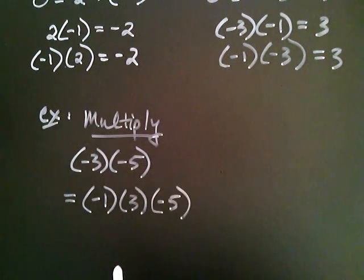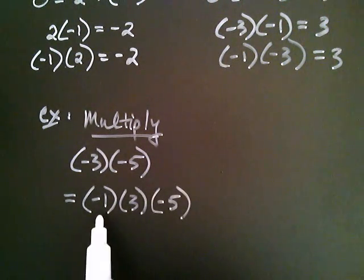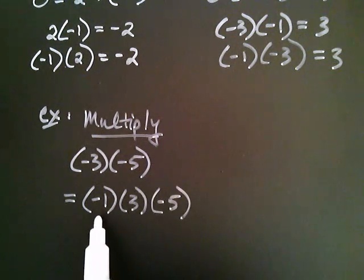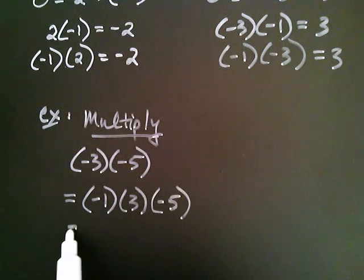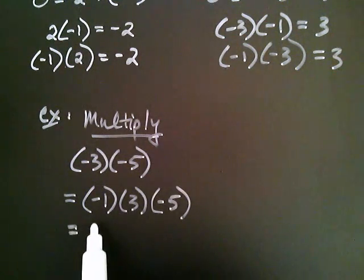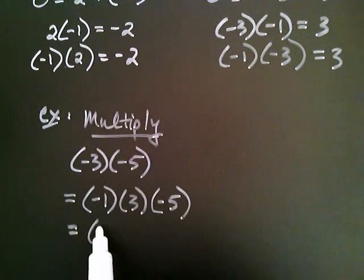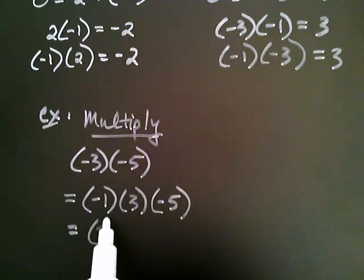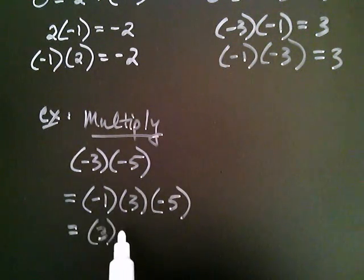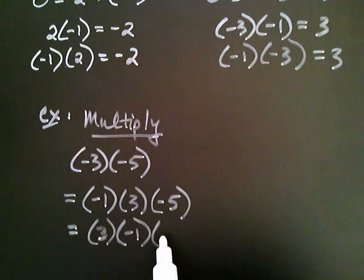...I can take advantage of the fact that multiplication is commutative — I can change the order. So I can write this as three times negative one times negative five.